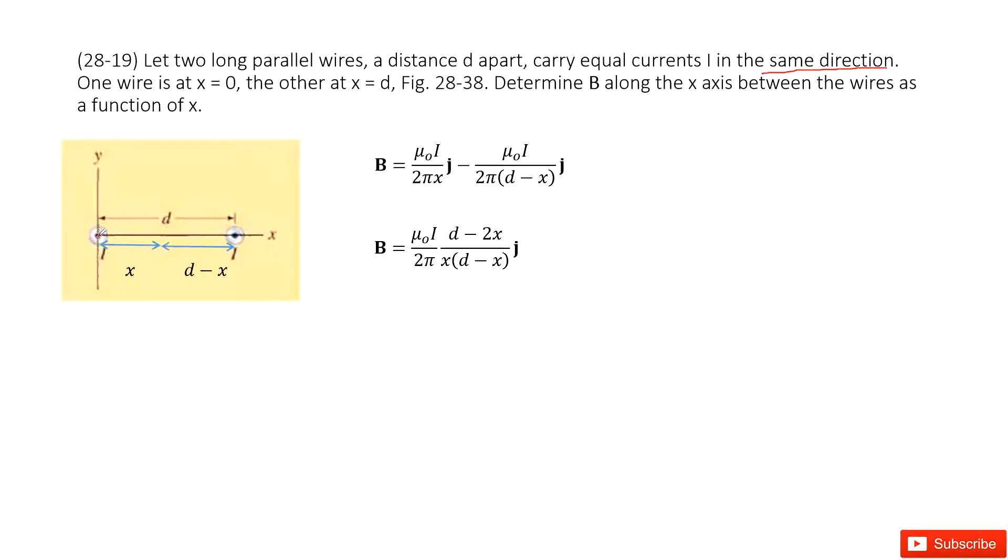So you can see we can consider this wire as out. Use the right-hand rule, you will find the magnetic field is just this way.